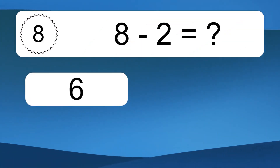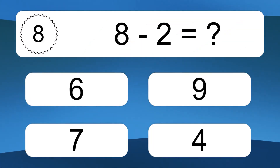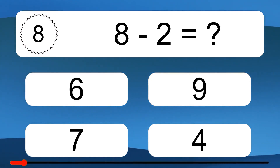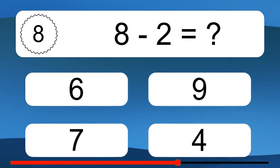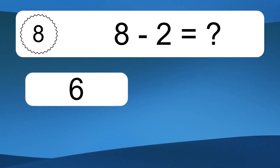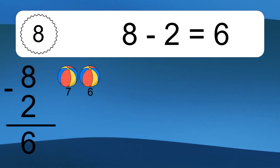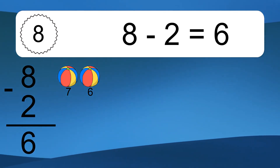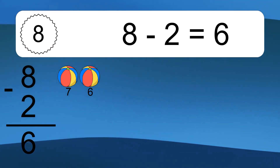8 minus 2 equals what? 8 minus 2 equals 6. Let's count it: 7, 6.